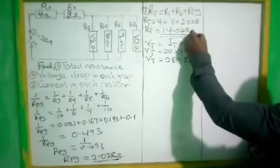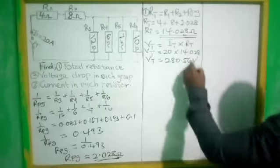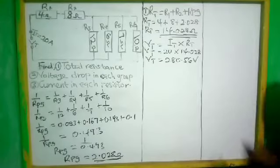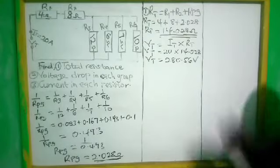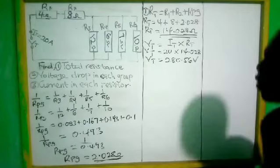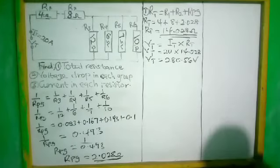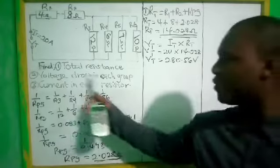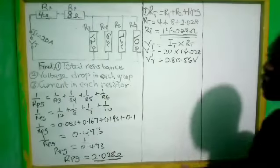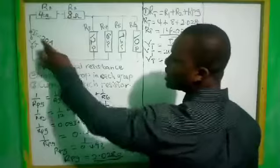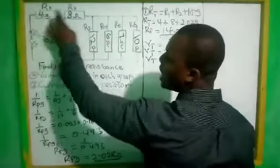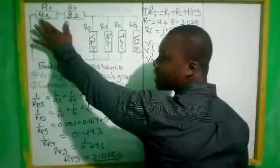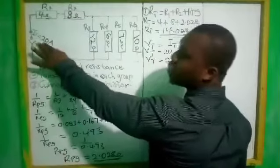Don't forget to bring your units. So this becomes our total voltage of 280.56 volts. Now that we have the total voltage, we can find the voltage drop in each group. Because R1 and R2 are in series, the same current of 20 amps flows through each. So you multiply 20 by 4 to get the voltage drop across R1, and 20 by 8 for R2.